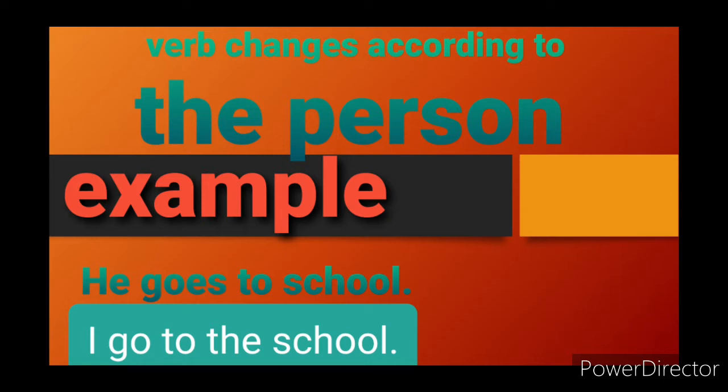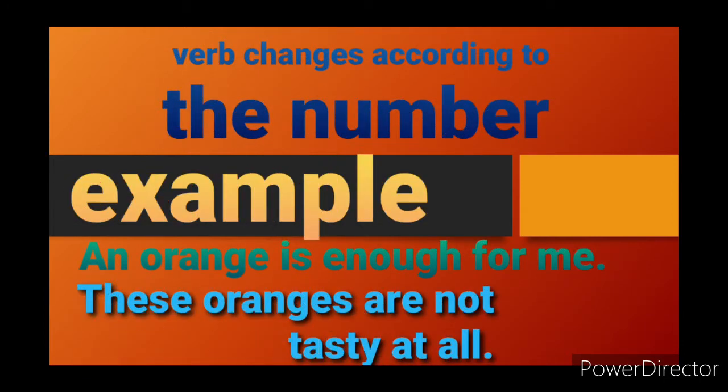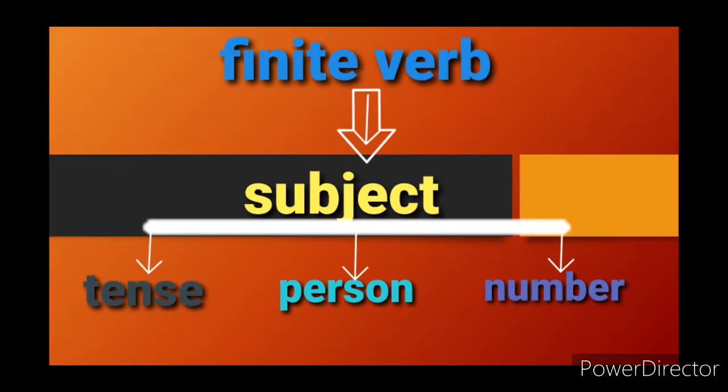Next is number. Here you can see singular and plural: 'An orange is enough for me.' Second example: 'These oranges are not tasty at all.' An orange is one singular subject, and these oranges is a plural subject. So we can understand that a finite verb has a finite or limited agreement with the subject, limited by tense, person, and number — and it changes as per each of these parameters.